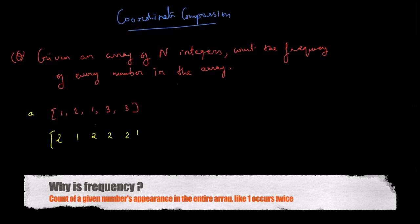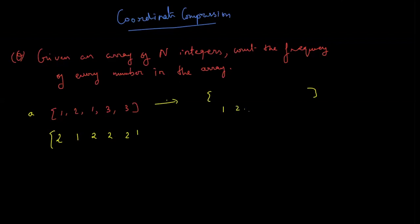So how do you do this? What you do is you take a frequency array which will be marked like 1, 2, 3, 4, 5 and so on.